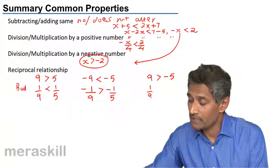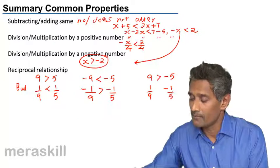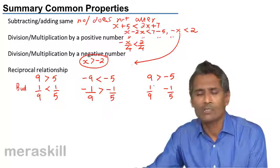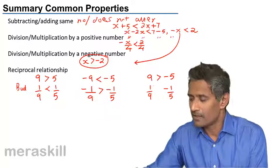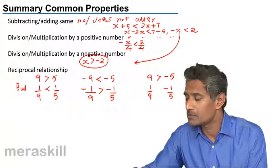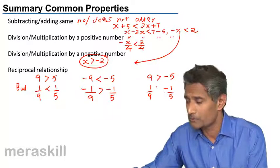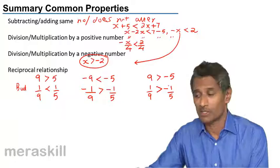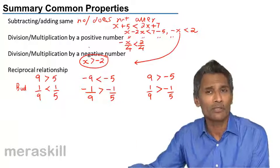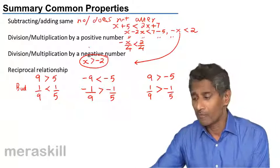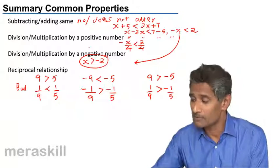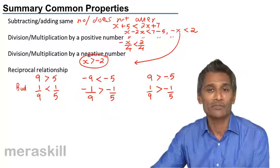And let's take 1 by 9 and minus 1 by 5. Here we don't have to think much. Actually speaking, these rules are not too complicated. For example, this one is an extremely simple rule: this continues to remain a positive number, this continues to remain a negative number, so the positive number has to be bigger than the negative number. Hence this is a simple summary of all the common properties. Don't worry, we'll be doing more examples so that it gets into your system as to how to do these kind of cases.